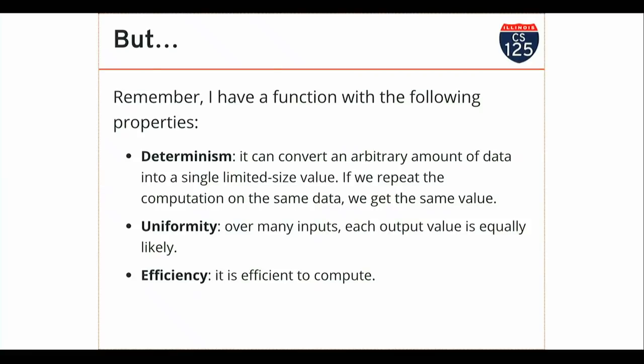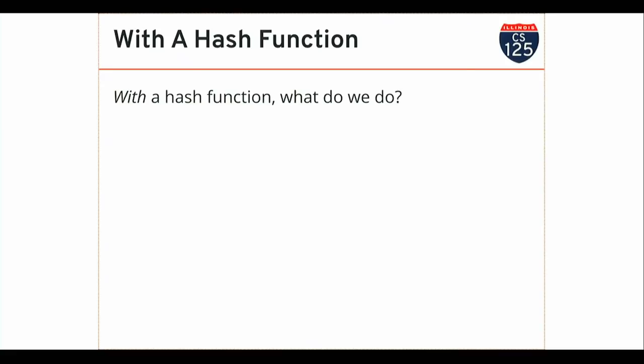But remember, I have this function — trust me that it exists — that can take this large file and deterministically convert it into a single value. The uniformity isn't as important here; determinism is, and it's also efficient to compute. So instead of downloading the file again, I do the following: I download the file once, I take the file contents, and I hash it. There are utilities on your computer that will do this for you. I hash my copy, and then I ask the server: is this the correct hash — the same hash you got when you hashed the file you wanted to send me?